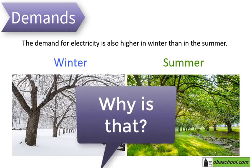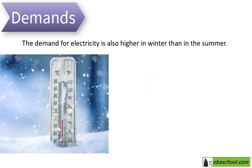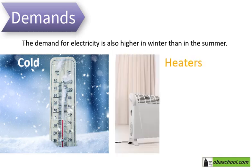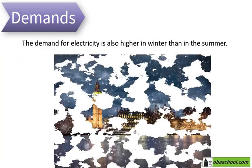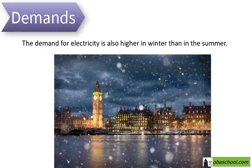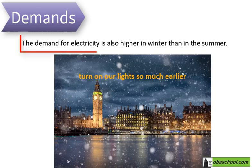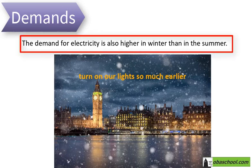Why is that? Since in winter it's quite cold, we tend to put on more of our heaters. Also, it gets dark around 4-5 pm in the UK, which means that we'll have to turn on our lights so much earlier. That's why we tend to use much more electricity in winter.